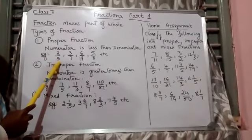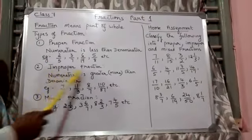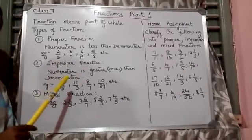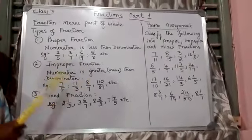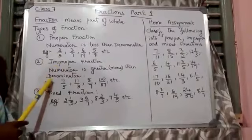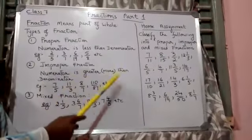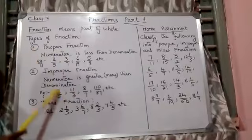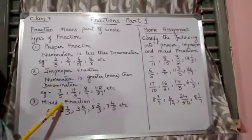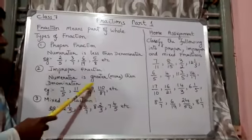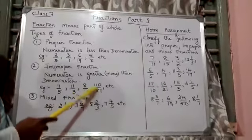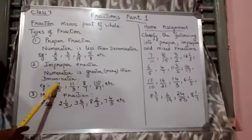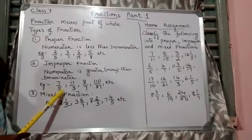In Improper Fraction, it is the opposite. Numerator is greater, denominator is smaller. If the numerator is greater or more than the denominator, then it is called an Improper Fraction. 7 by 5 is an example, 11 by 3 is an example, 8 by 7 is another example, 110 by 87. You can see here, numerator is greater, denominator is lesser.